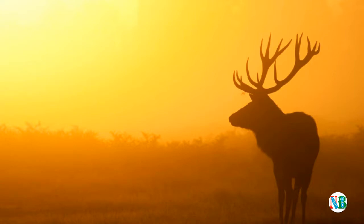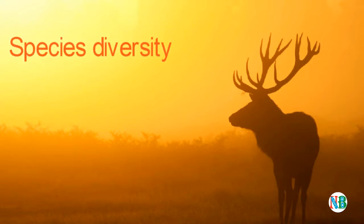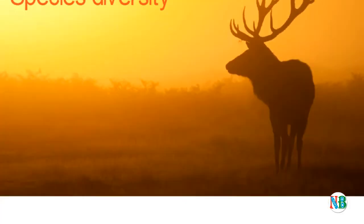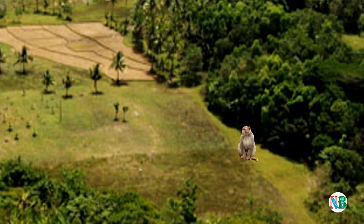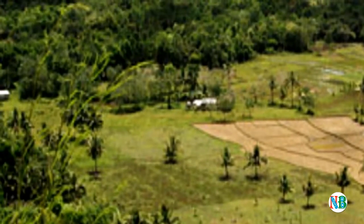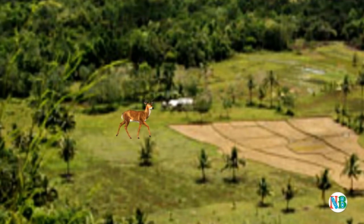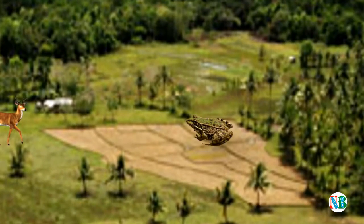Now let us take species diversity. The study of diversity among and across the species is called species diversity. For example, let us take a forest as an ecosystem. Here, animals living in this ecosystem are the species — they are monkey, deer, frog, snake, etc.